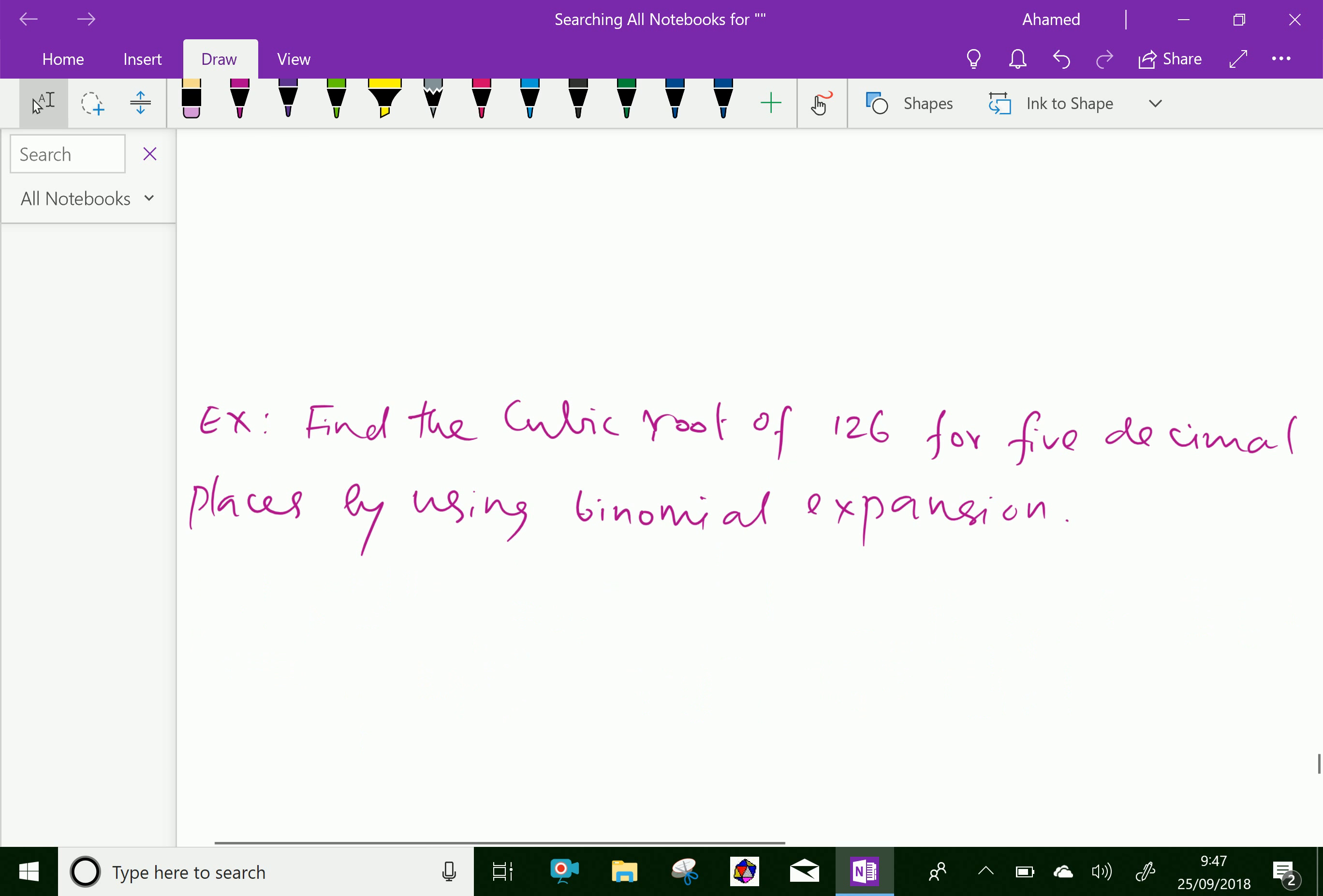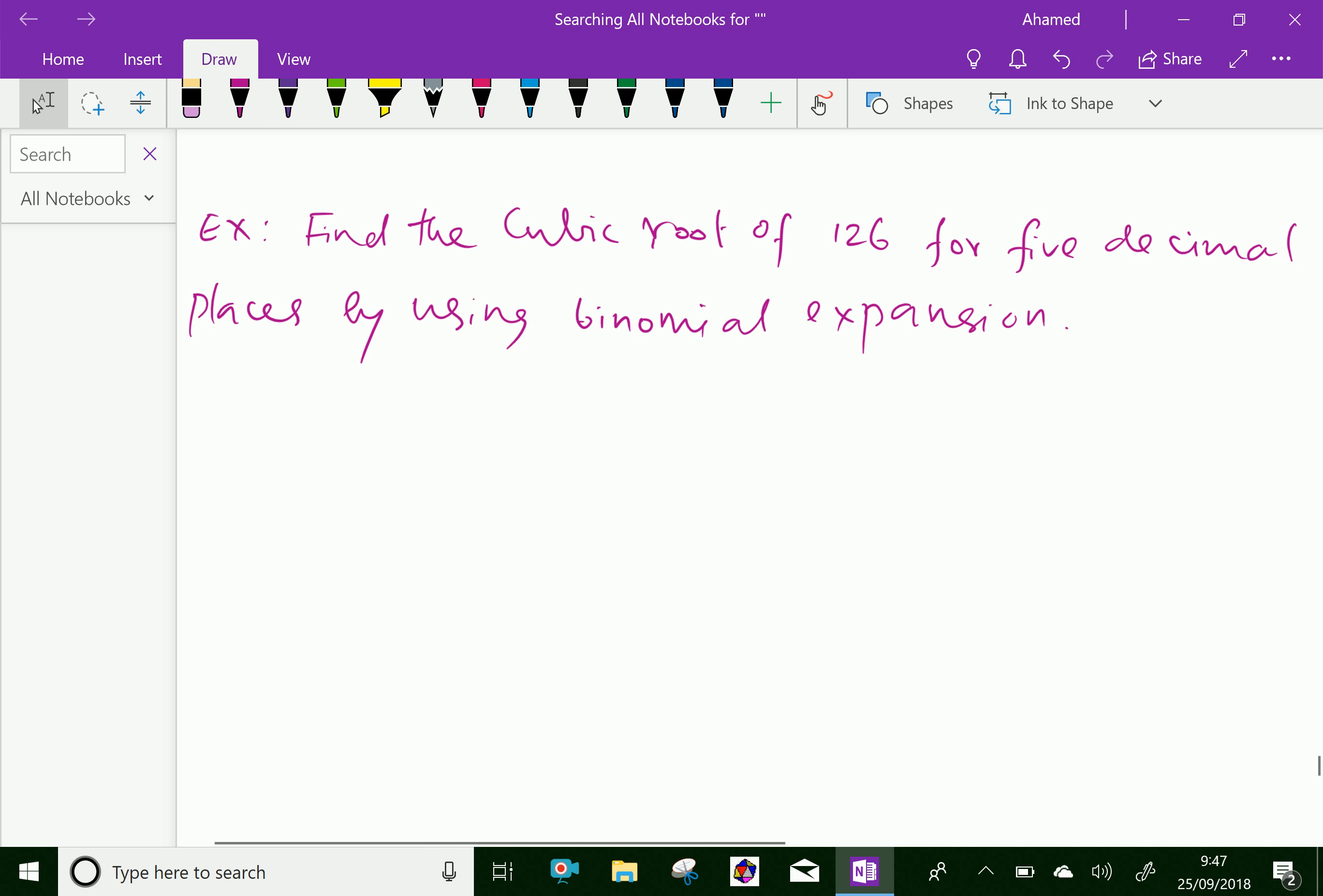We can do one example to understand this concept. Look at this example. Find the cubic root of 126 for five decimal places by using binomial expansion.